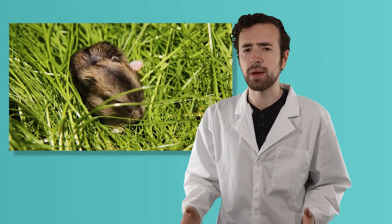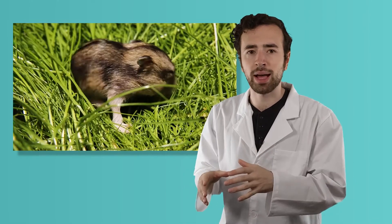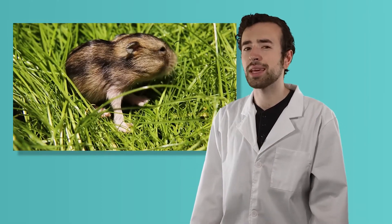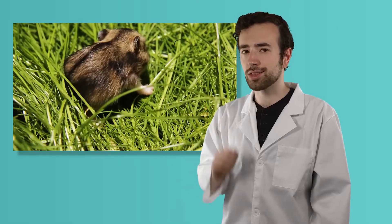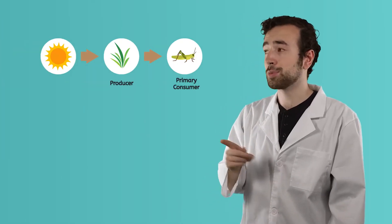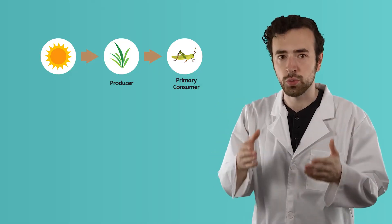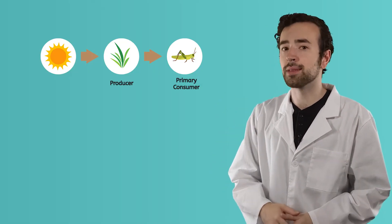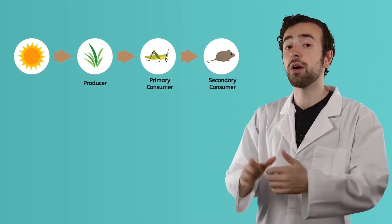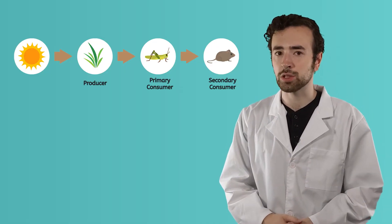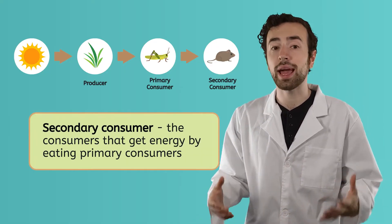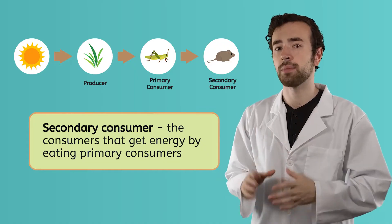The chain doesn't stop with primary consumers, though. Imagine a mouse scurries by and decides the grasshopper looks like a tasty meal. When it eats the grasshopper, the energy is passed to the mouse. Energy has flowed from the sun to the grass, to the grasshopper, and now to the mouse. We call that mouse a secondary consumer. Secondary consumers get energy by eating primary consumers.